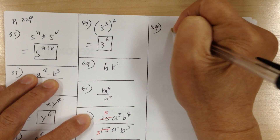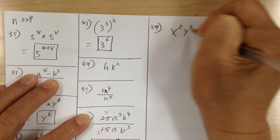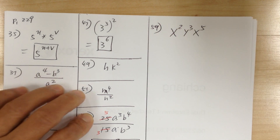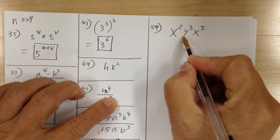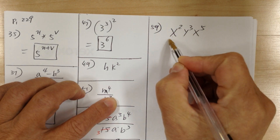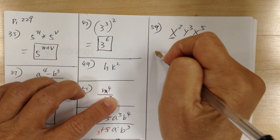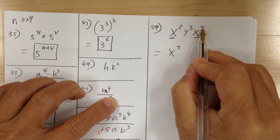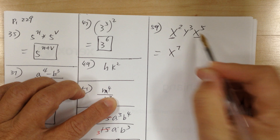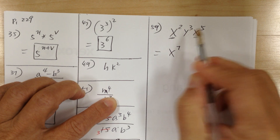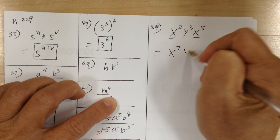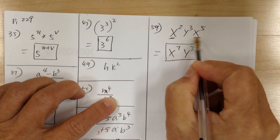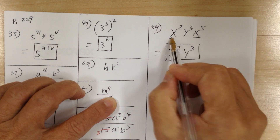Number 59, you have x squared, y to the 3, x to the 5. You can only combine the x terms with each other. So this would be x to the 7, because 2 plus 5 gives you 7. The y cannot be combined because it's a different base — so just leave it. You can only combine terms with the same base.